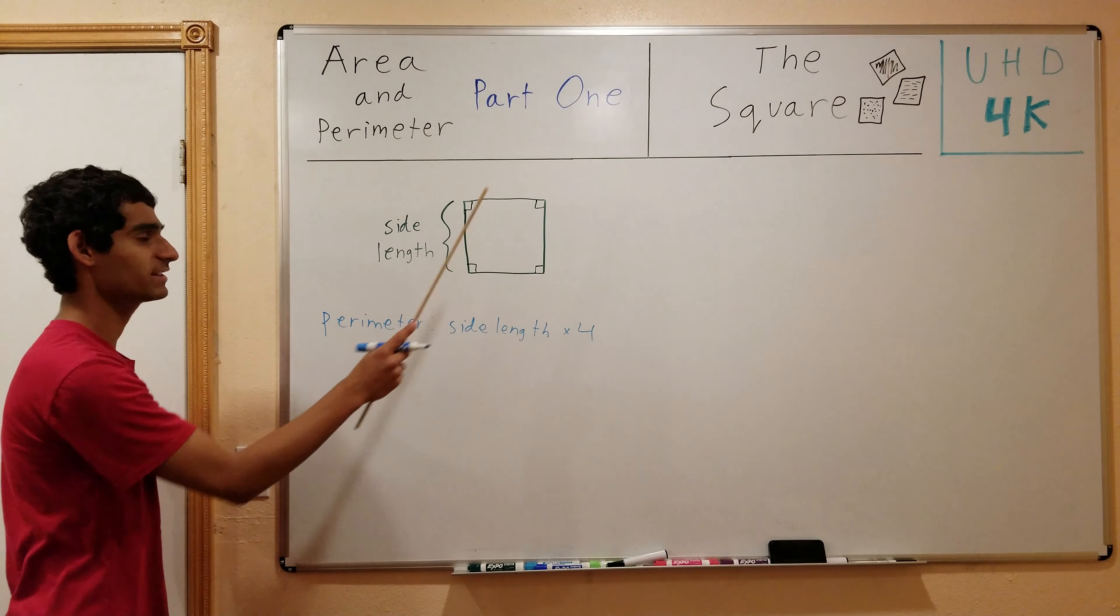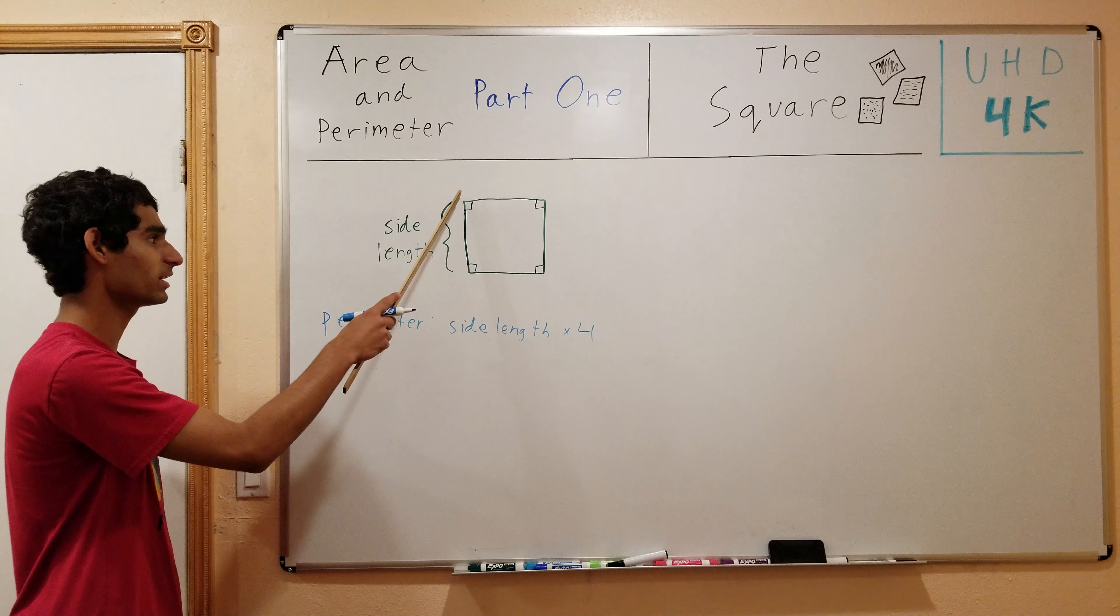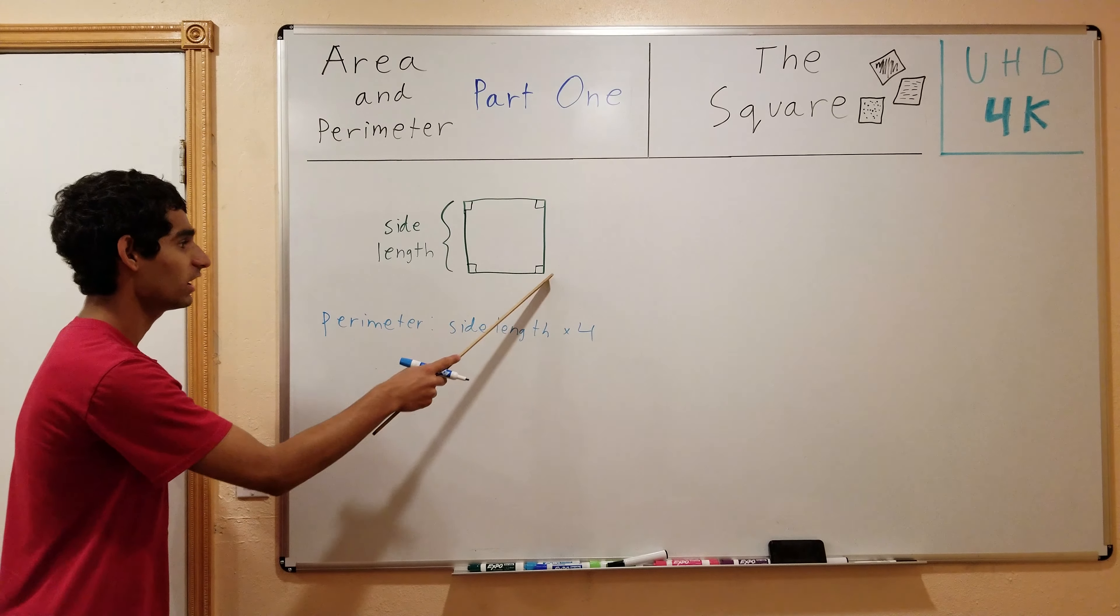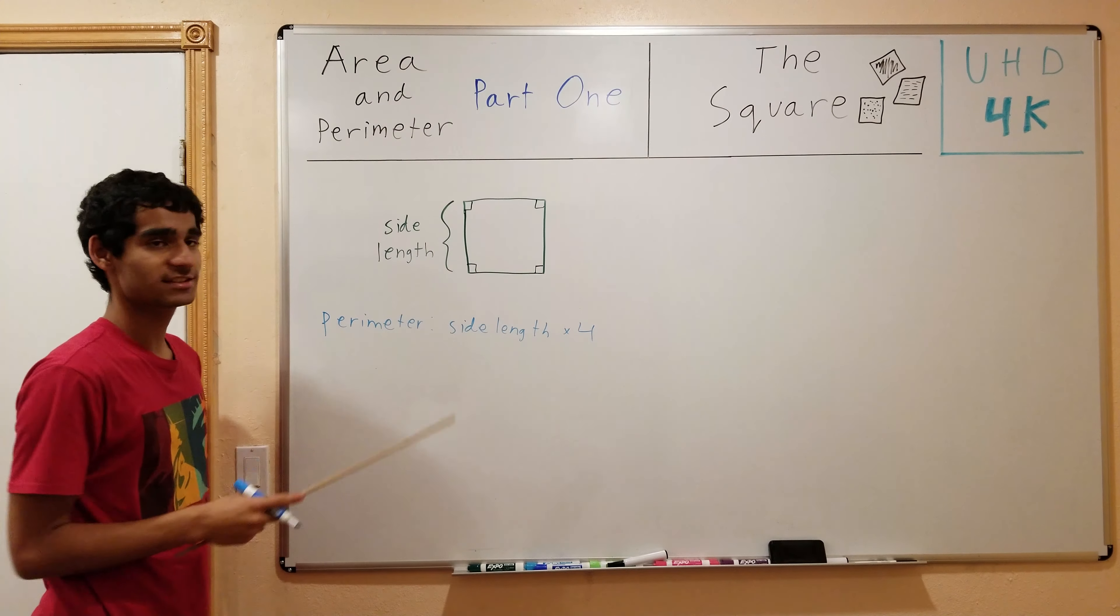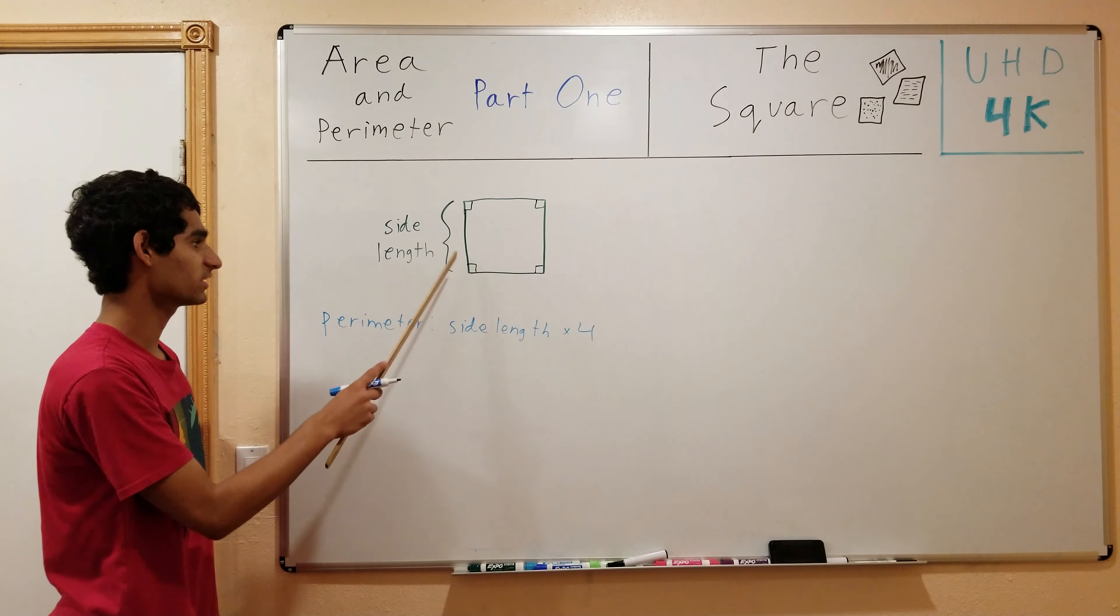Yeah, probably simple, four sides of equal length. So to find the perimeter, which is the distance around the square, basically the sum of all the sides, simply equal to the side length times 4.